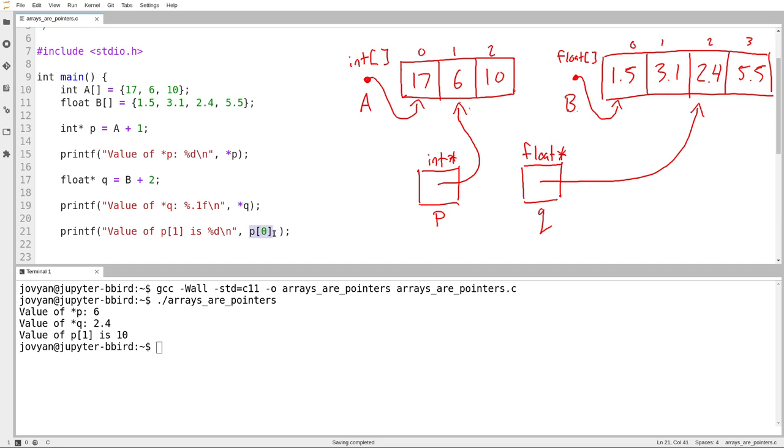In fact, P sub 0 is, in fact, syntactic sugar. When I write P sub 0, what I'm really writing, this is exactly equivalent to just writing star P. And you can try that on an array as well. If I write A sub 0, I can also write, in any context I could write A sub 0, I could also just write star A.